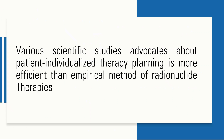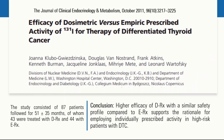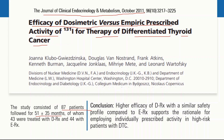There are numerous studies advocating patient-individualized therapy planning, showing it is more efficient than empirical radionuclide therapy. A study published in Journal of Clinical Endocrinology and Metabolism in 2011 titled 'Efficacy of dosimetry versus empiric prescribed activities of iodine-131 for therapy of differentiated thyroid cancer' studied 87 patients followed for 51 ± 35 months — 43 treated with dosimetry-based planning and 44 with empirical-based planning.